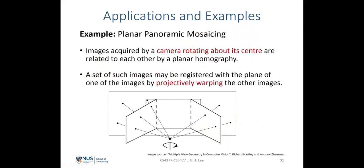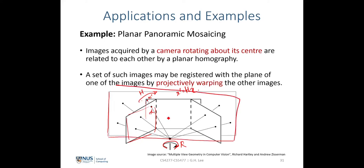The next application from pure camera rotation is planar panoramic mosaicing. Suppose we are given several images taken by a camera undergoing pure rotation only. We know that point correspondences between any pair of these images are related by a homography. So for a point x prime and x in two images, x prime equals H multiplied by x, which is a planar homography.